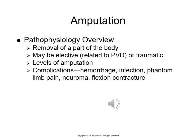For neuroma, patients may need peripheral nerve blocks, steroid injections, or even hypnosis. Flexion contractures — hip and knee contractures — are most often seen in patients with lower extremity amputation. This can be avoided by ambulating the patient with a prosthetic device. Proper positioning and active range of motion exercises in the early post-op period also help prevent contractures.